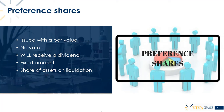Preference shareholders are also entitled to a share of the company's assets on liquidation, and — as the name suggests — they take preference: they get paid before ordinary shareholders. They are still quite low down in the overall queue, but they rank ahead of ordinary shareholders. So in theory, there is less risk associated with preference shares than with ordinary shares.